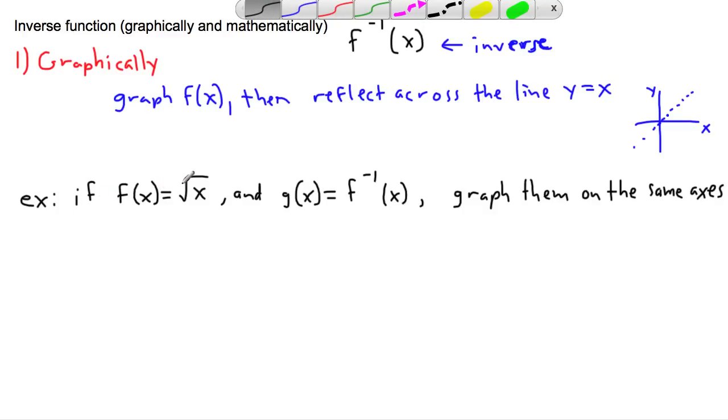If f(x) is the square root of x, and g(x) is the inverse, graph them both on the same axis. This is x and this is y. We have to first know what f(x) equals square root of x looks like.